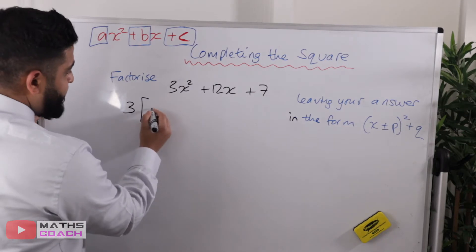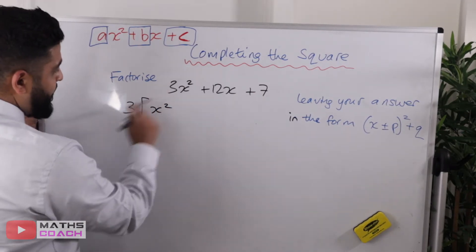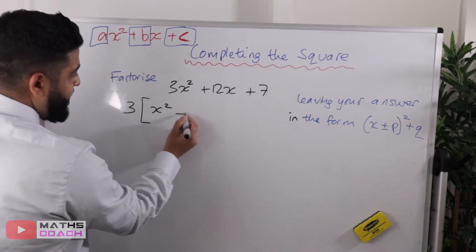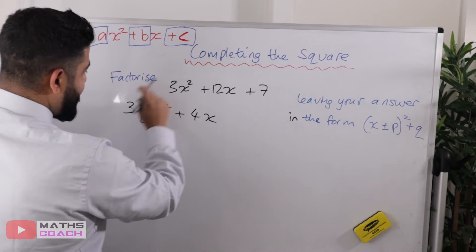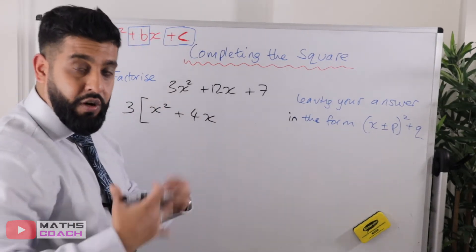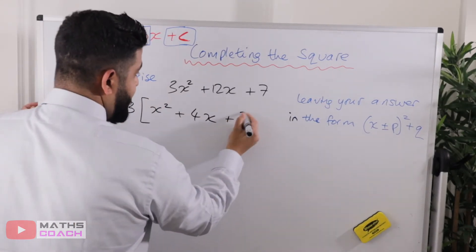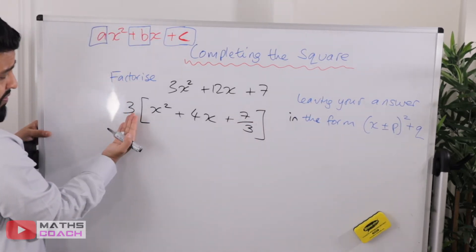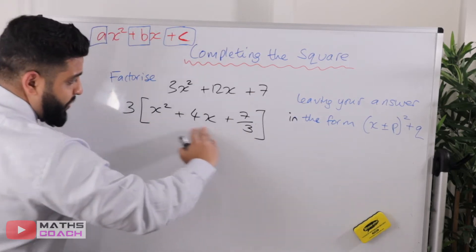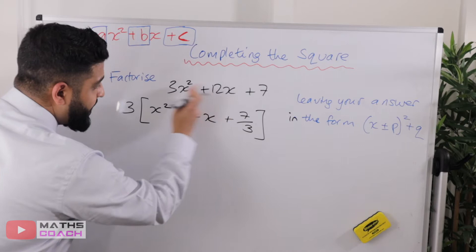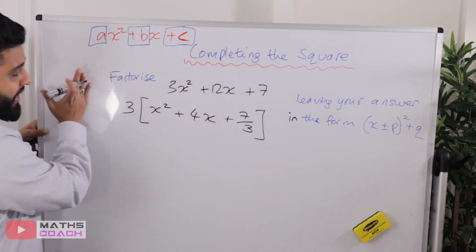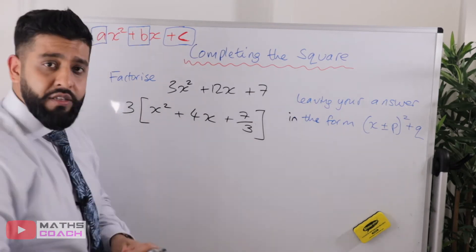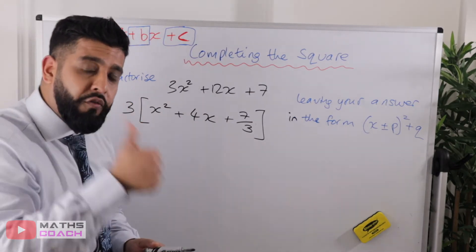So if you take the 3 out and use a square bracket, you'll have x squared — because when you multiply back with the 3 it will give you all of that again. So 12 divided by 3 is 4x, and then 7 divided by 3 doesn't give a nice integer value, so we're just going to leave it as 7 over 3. I've now taken the 3 out, and I'm going to leave it aside and let it come back at the end. That's step one sorted — making the coefficient of x squared equal to 1.